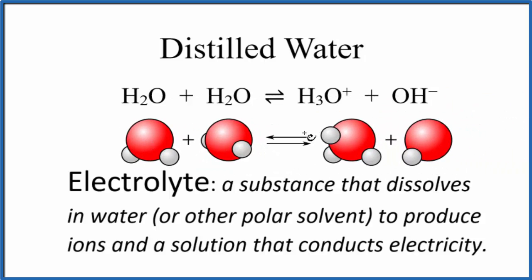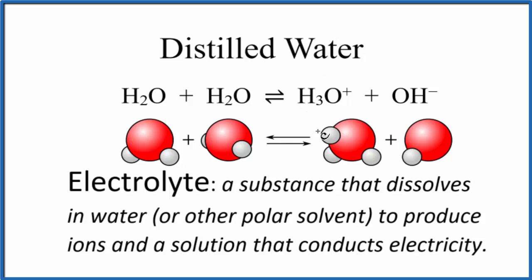This equilibrium symbol means it's going back and forth — a few molecules are breaking apart and coming back together. So if you had a sample of distilled water, there would be some ions in it, just not very many. For that reason, it could be considered a weak electrolyte.